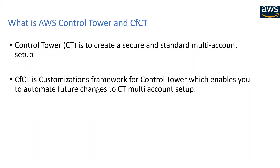As a first step, you create Control Tower in the management account, and that creates a few organizational units in your AWS Organizations like Security, Infra, and Sandbox. Within that Security OU, it creates the log archive accounts for CloudTrail and Config. It also creates a few Service Control Policies, which are global permissions that can be set from your management account. So that is what Control Tower is — it follows standard AWS best practices.